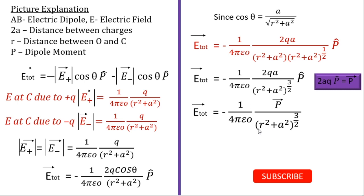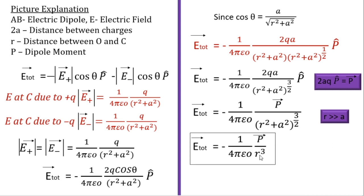If r is very much greater compared to a, then a squared to the power 3 over 2 gives a cube. Since a is very small, a cube is negligibly small and can be neglected. For r squared to the power 3 over 2, the 2s cancel and we get r cubed. So E total equals minus of 1 over 4 pi epsilon naught times P vector divided by r cubed. This is the electric field for the dipole at the equatorial plane.